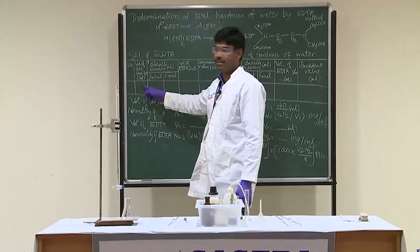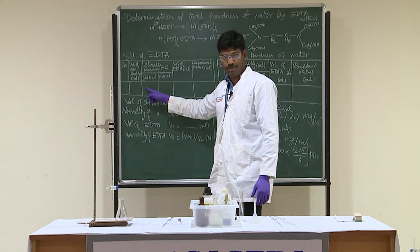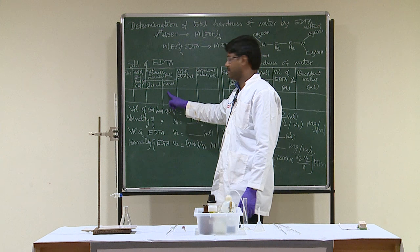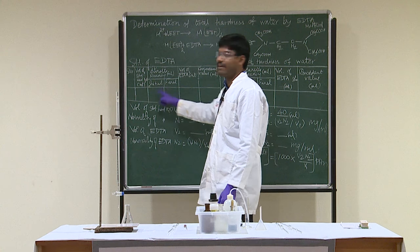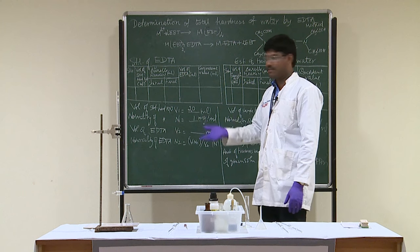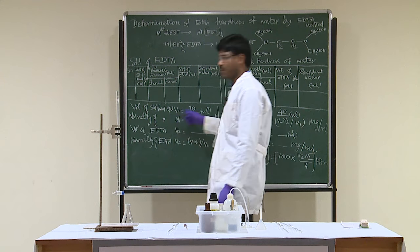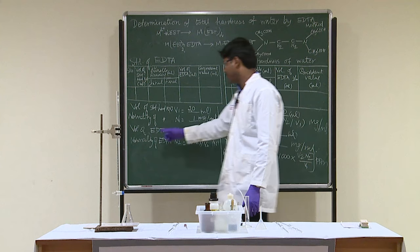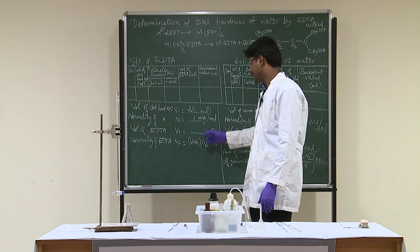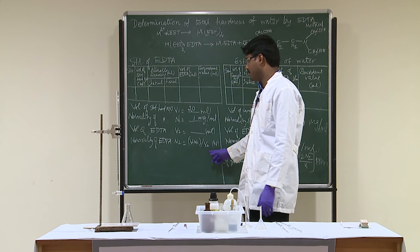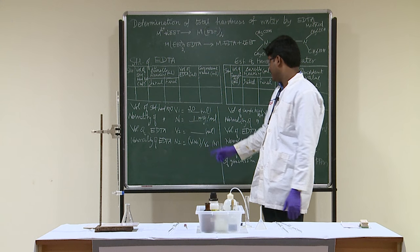The volume of standard hard water taken using the pipette is 20 ml. The initial burette reading is 0 and the final reading at the end point is 10.1 ml, so the volume of EDTA used is 10.1 ml. Record the concordant value — the consistent repeated reading. The normality of standard hard water is 1 mg/ml. Using V₁N₁ = V₂N₂, the normality of EDTA is calculated as N₂ = V₁N₁ / V₂ (in mg/ml).